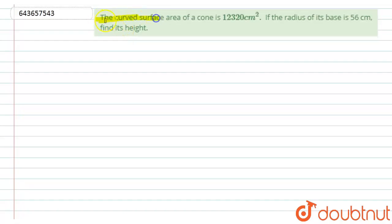Here we have the curved surface area of a cone is 12,320 centimeter square. If the radius of its base is 56 centimeter, find its height. Okay, so let us start with the solution.